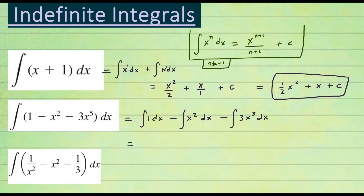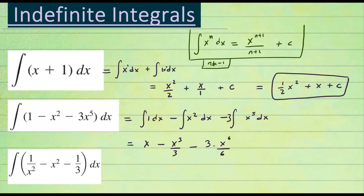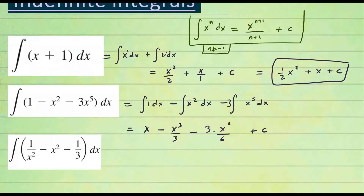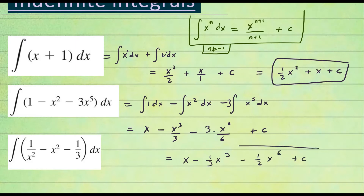The integral of one — think of x to the zero power, add one to the power — gives x. For the second term, you add one to the exponent two to get three, so x cubed over three. For the last term, three is a constant that stays; integrating x to the fifth gives x to the sixth over six. Simplifying: x minus one third x cubed, and three over six is one half, so minus one half x to the sixth plus C. That is the antiderivative of this function.